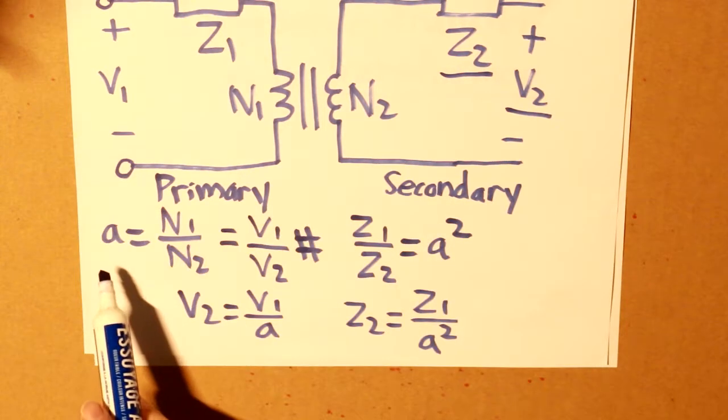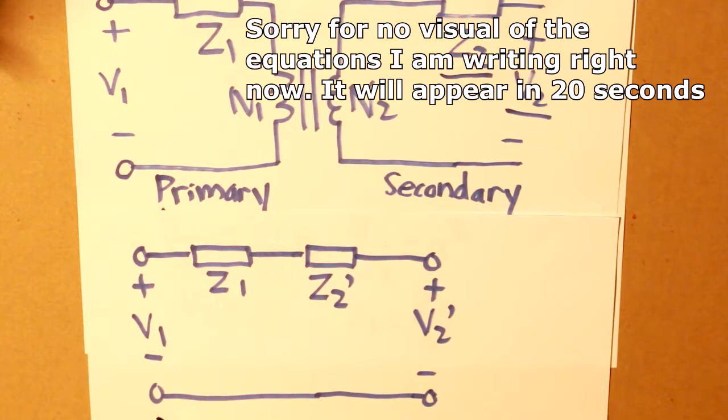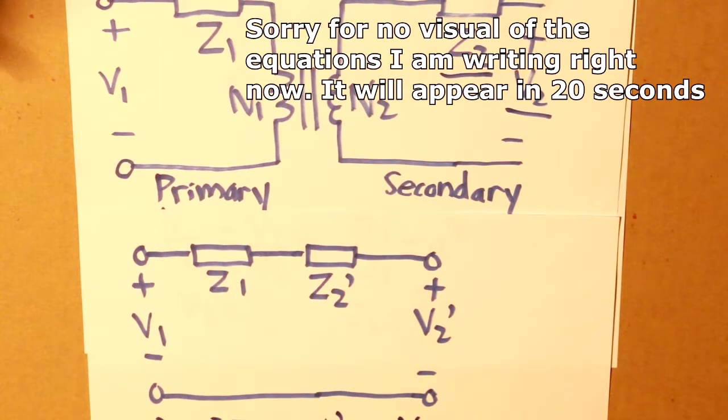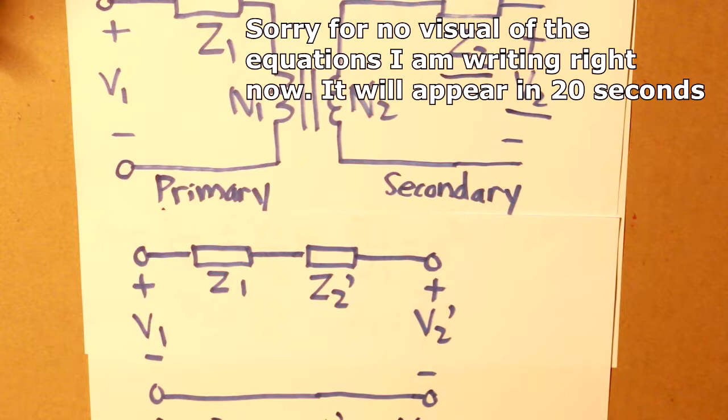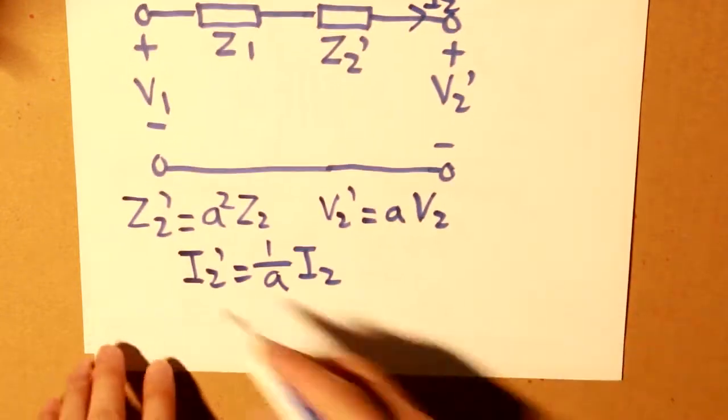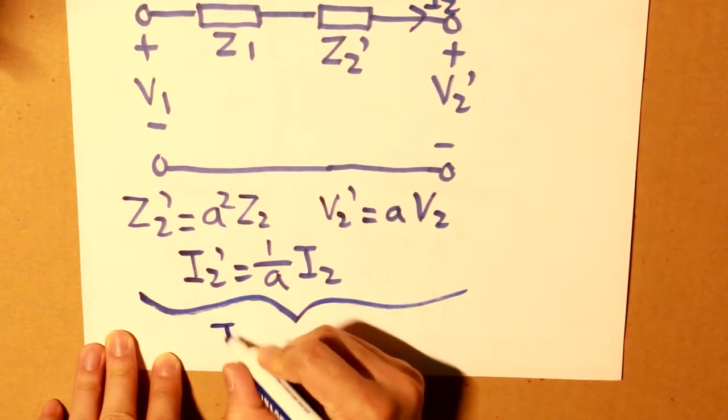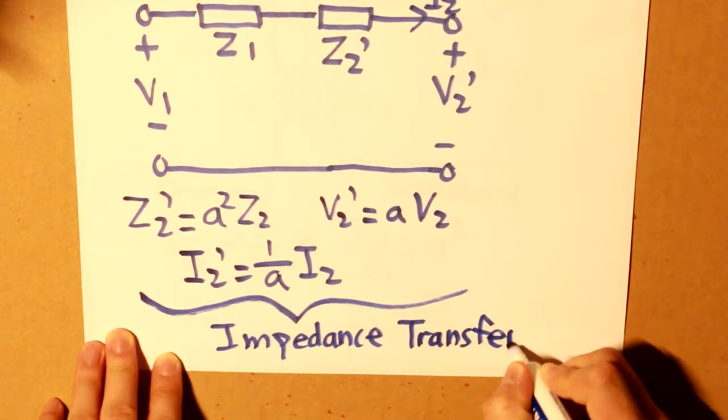Going back to our equation a amplification, our z2 value and our v2 value would be then equal to a squared multiplied by the original impedance z2. V2 will be equal to a times v2, and now for our current that will be a little different. I2 will be 1 over a times i2. So that is what impedance transfer is, and that is to transfer our secondary components to our primary side.